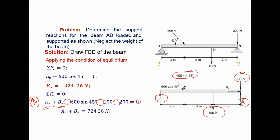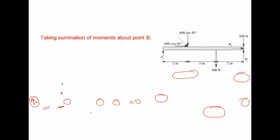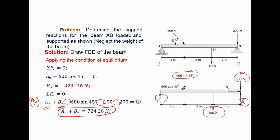Simplifying this equation, you get: Ay plus By equals the sum of downward forces. Now you have derived two equations — the horizontal force balance and the vertical force balance — but there are three unknowns: Ay, Bx, and By. With two equations you cannot solve three unknowns, so you must use another equation. That additional equation comes from the moment balance.